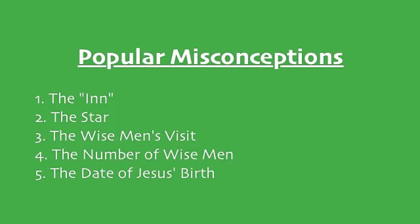Now, how many wise men were there? Three on the mantle — that's the popular misconception. But Scripture doesn't say there were three wise men. It's most likely because of the gifts. Look at verse 11: 'Going into the house, they saw the child with Mary his mother, and they fell down and worshipped him. Then, opening their treasures, they offered him gifts — gold and frankincense and myrrh.' There are three gifts mentioned, but that doesn't necessarily mean there were three kings. Looking throughout the passage, the pronouns and verbs are plural, so there were at least two — but there could have been twelve of them.